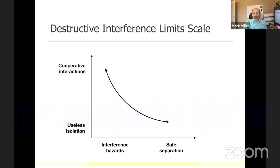The progress of computer science — both software engineering and security — can be seen as the progress of the discovery of modularity and abstraction mechanisms, lifting the tradeoff curve.